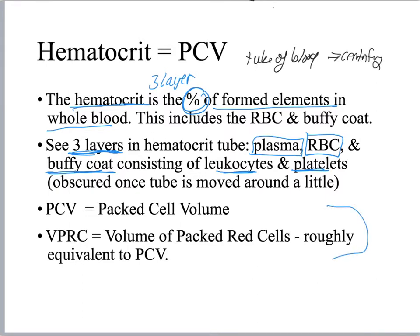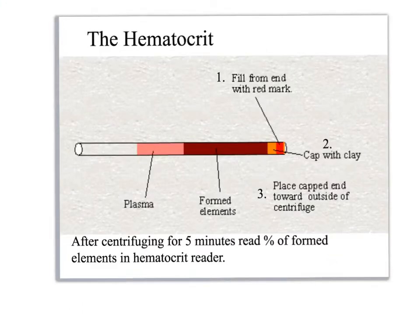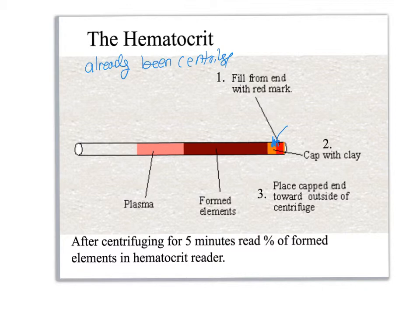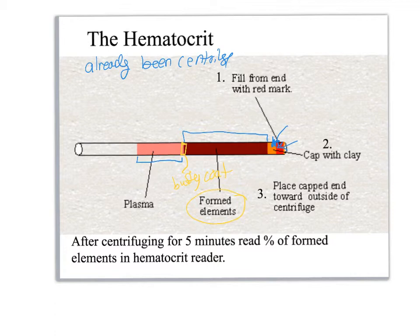Here are some abbreviations you can remember. Looking at a hematocrit that has already been centrifuged, you'll notice they put a cap of wax or clay at one end so the blood doesn't spin out the wrong side. The red blood cells go to the bottom and the plasma is on top. Technically the buffy coat is right in between, but often as soon as you move the tube it gets mixed in with the formed elements, so when you do the reading you're measuring all the formed elements — not just the red blood cells — because the buffy coat layer is really, really thin.